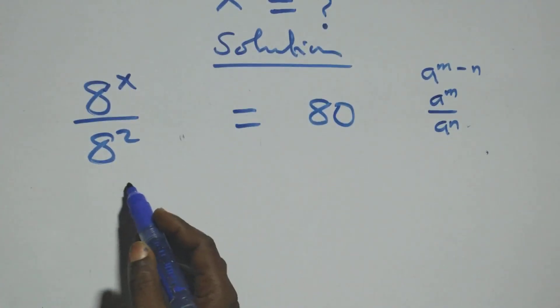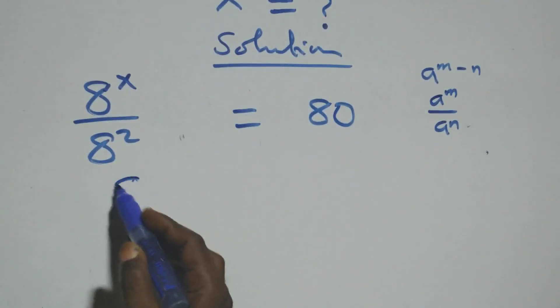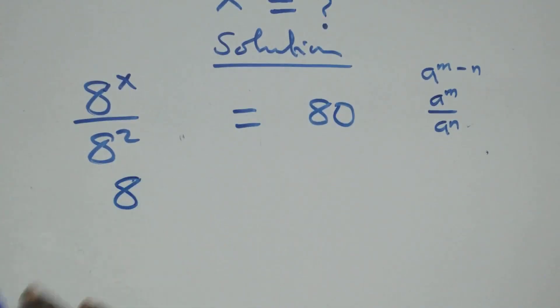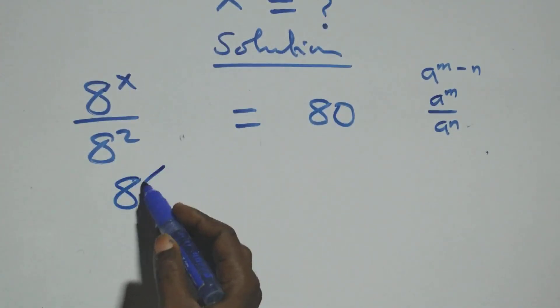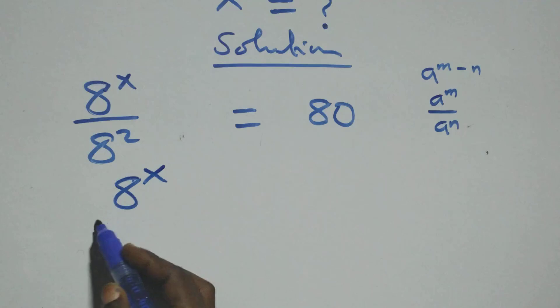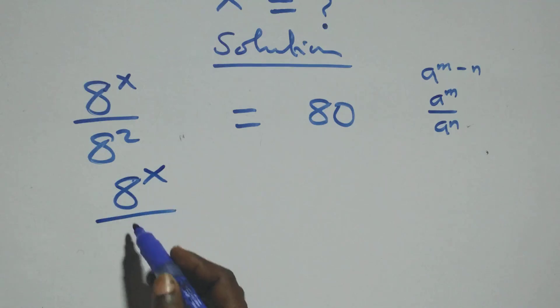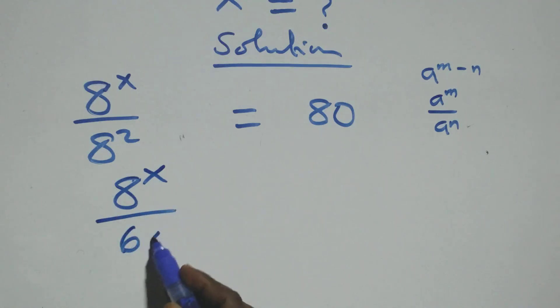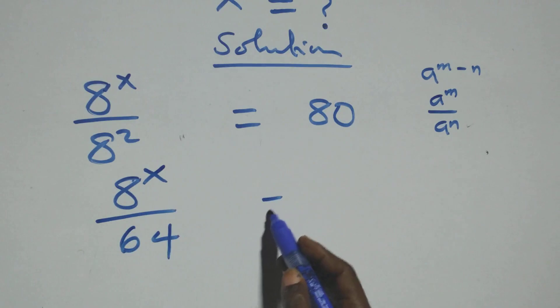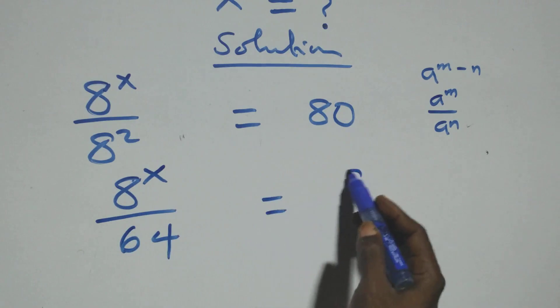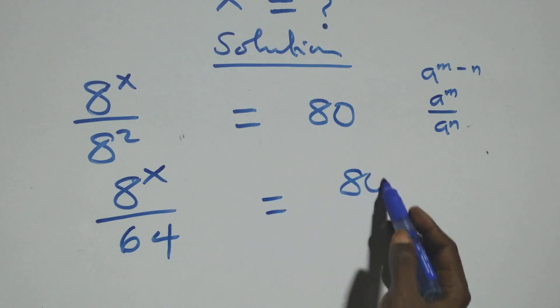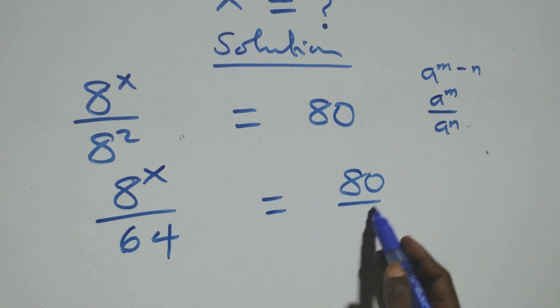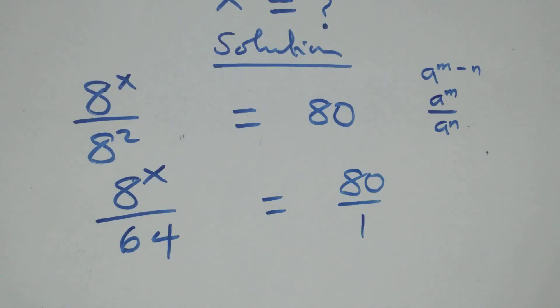This is the same thing as 8 raised to power x over 8 squared. Now 8 times 8 equals 64, so we have 8 raised to power x over 64, and we can write the right side as 80 over 1.